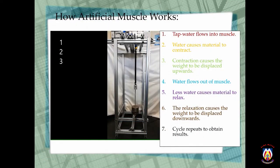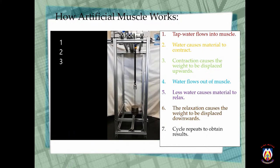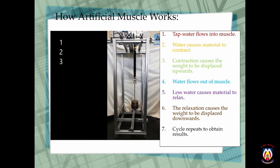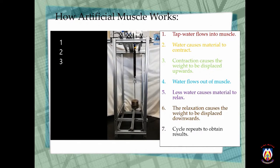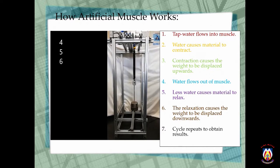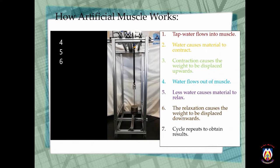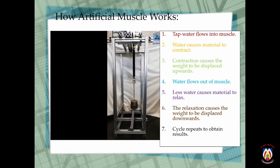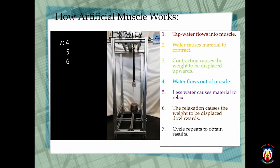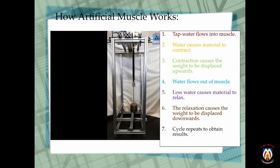So as the video shows, as the tap water flows into the muscle, the water makes the muscle contract, causing an upward displacement of the mass. Then as water flows out of the artificial muscle, the decrease in water causes the muscle to relax and then the weight is once again displaced but this time in a downwards direction. And then the cycle repeats itself until enough data is obtained.